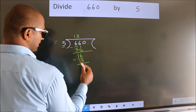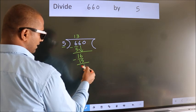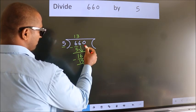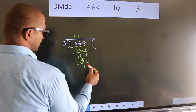Now we subtract. We get 1. After this, bring down the beside number. So 0 down.